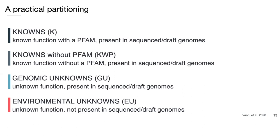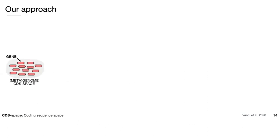We defined four categories describing the different levels of functional characterization of the coding sequence space, valid across organisms and environments. Starting from the known, we defined our knowns as those genes annotated to PFAM domains of known function, and the knowns without PFAM as those genes homologous to characterized proteins but not found in the PFAM database. Our first category of unknowns, the genomic unknowns, includes genes with unknown function found in sequenced or draft genomes — basically all those genes homologous to hypothetical or uncharacterized proteins in databases. We call environmental unknowns our set of completely uncharacterized genes found only in environmental samples.